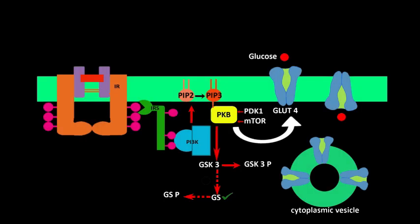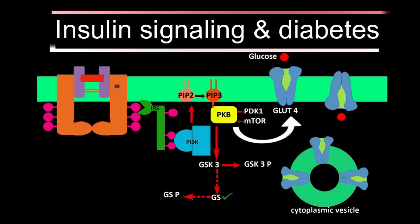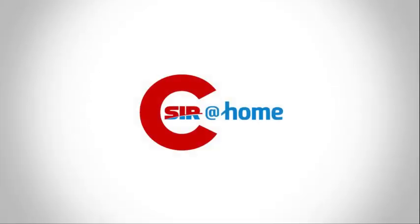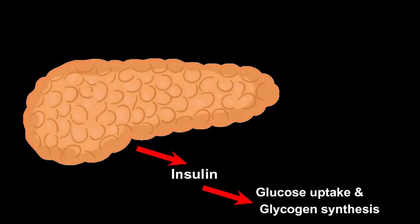Today we are discussing insulin signaling and diabetes. What are the consequences of high and low blood glucose levels in our body? When blood glucose level is high, it can damage the blood vessels, which can increase the risk of heart disease, kidney disease, and vision problems. Lower blood glucose level can lead to loss of consciousness and also lead to coma.